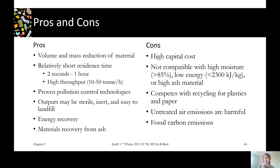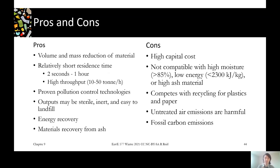We also compete with recycling for plastics and paper, which are the best fuels — the driest and highest energy — but those are better placed into their respective diversion streams for materials recycling and organic waste treatment. Untreated air emissions can be harmful, which is why so much effort goes into that part of these plants. Even though biogenic emissions don't count toward carbon accounting, we are putting fossil carbon into these facilities through plastics and petroleum-derived products, which goes up into the atmosphere just like burning fossil fuels.